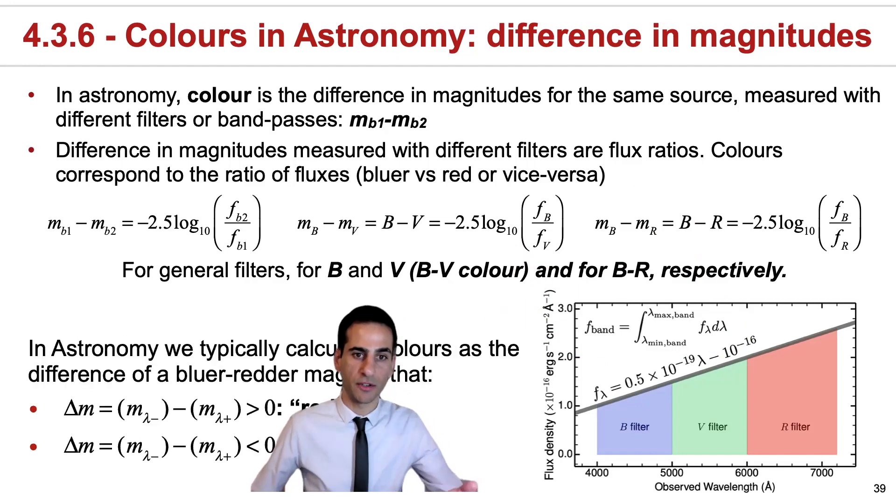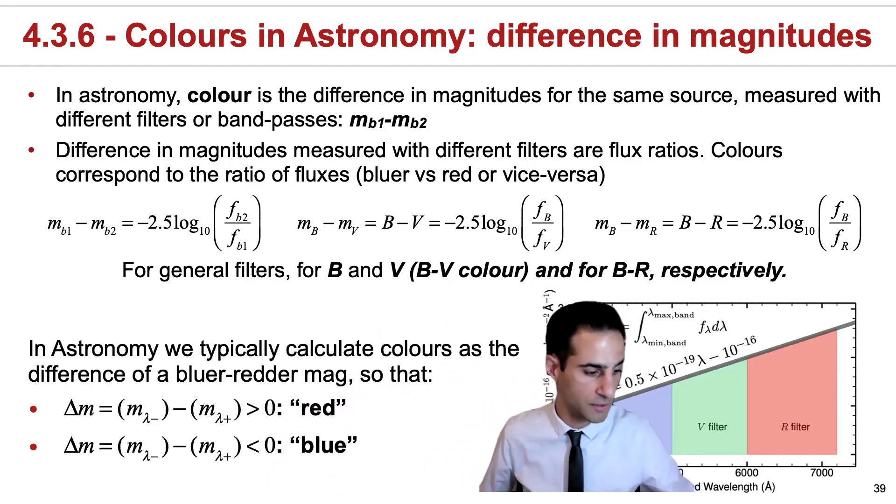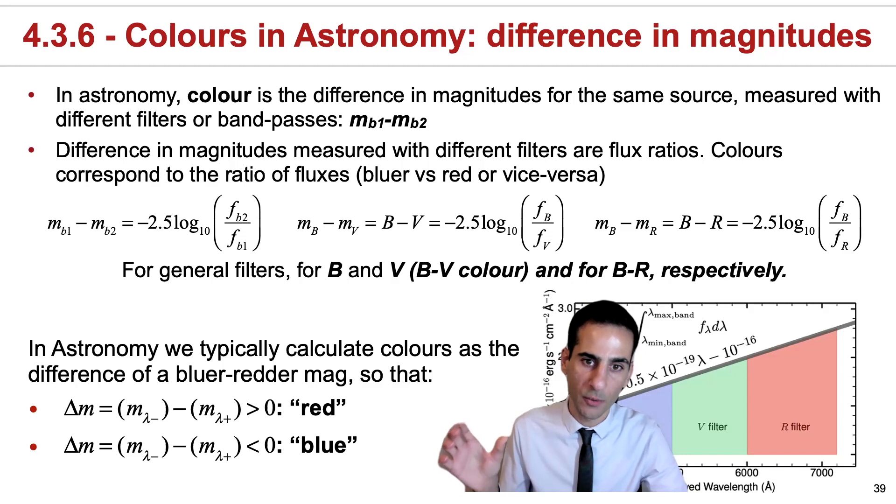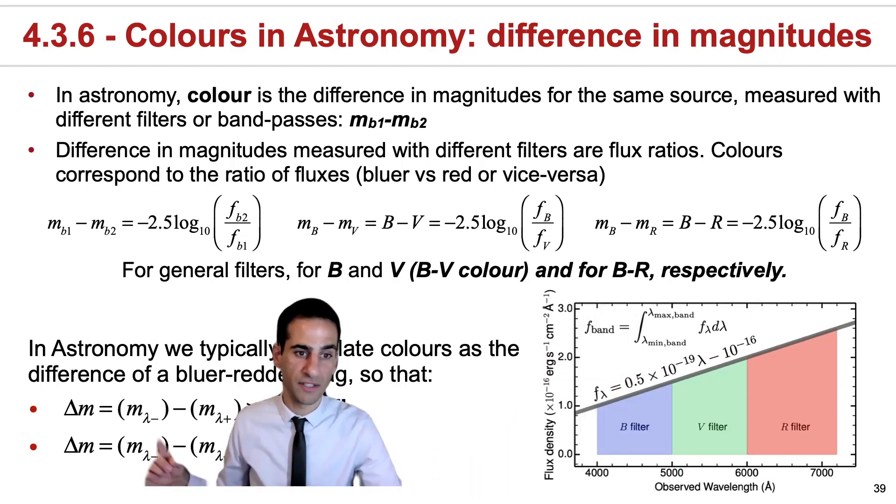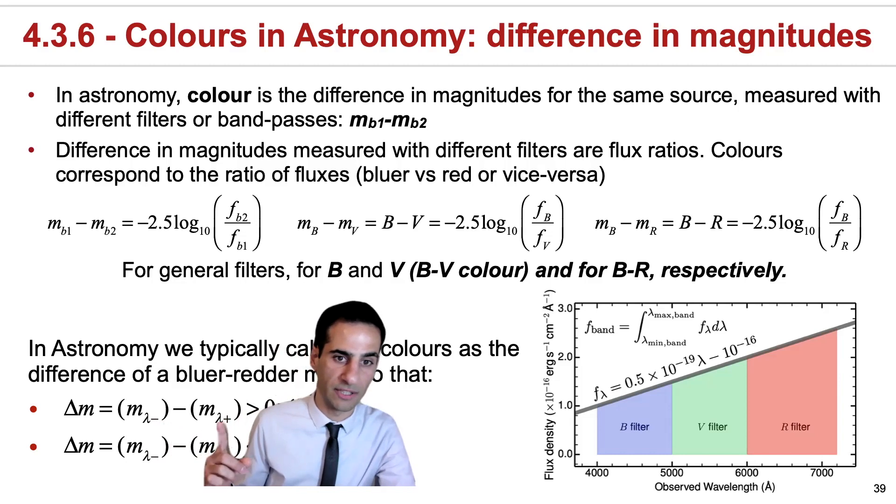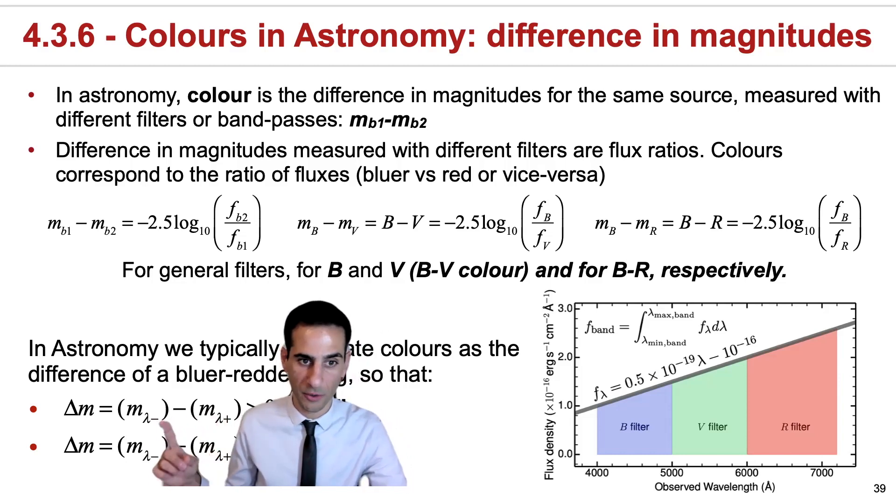A convention we use in astronomy, which you'll find in your lecture notes, is that when we look at colors, we typically subtract a magnitude from a bluer band from a magnitude at a redder band. This is what I convey by using lambda minus and lambda plus: a magnitude at a longer wavelength minus a magnitude at a shorter wavelength.